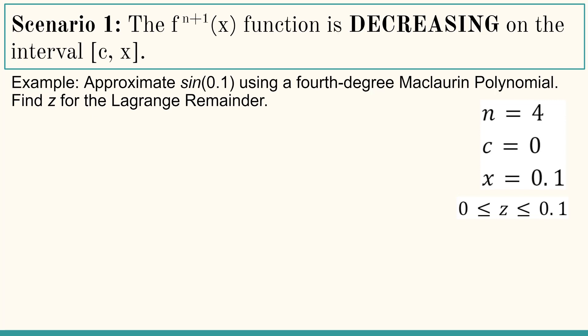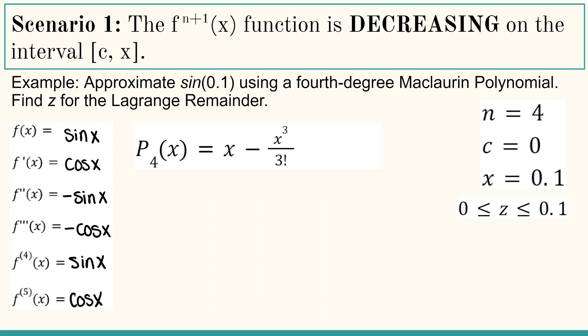This means z must be on the interval 0 to 0.1 inclusive. Sine x is an elementary series, so we can go off of our memory for that, or we can use the Taylor formula to create the polynomial. The polynomial will be of fourth degree, but remember, the x to the 4 term has a 0 coefficient, so it is not shown. Using this polynomial to approximate sine of 0.1, we're going to get 0.09983 repeating.